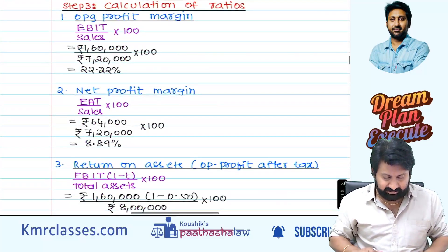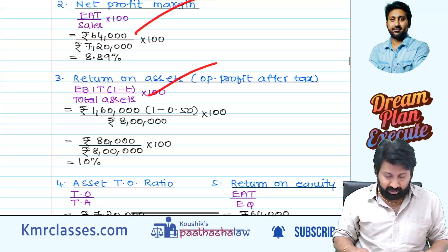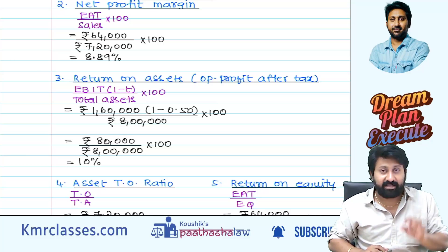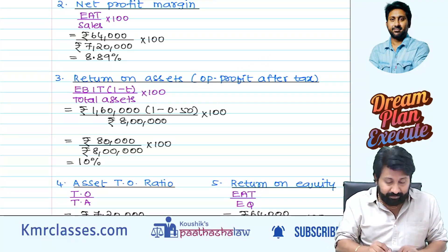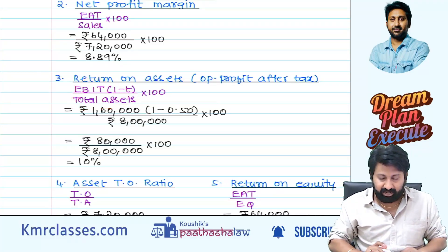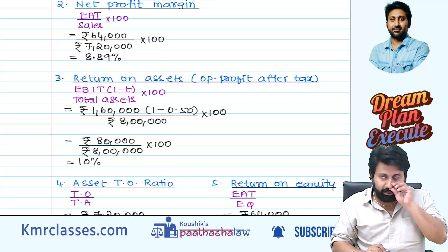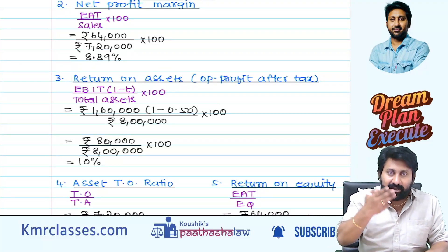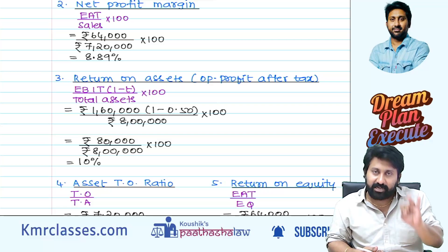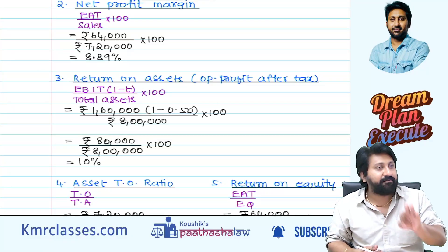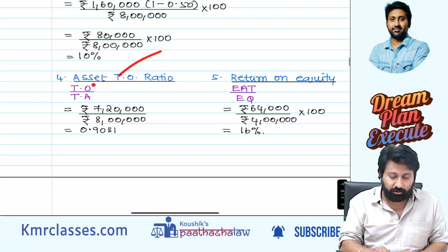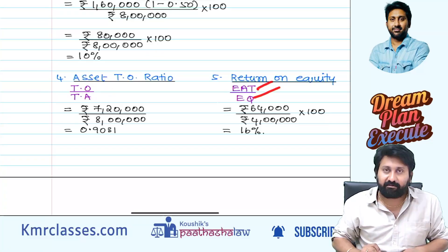EBIT by sales gives operating profit margin. Very important adjustment — return on assets: if they clearly tell you to take operating profit after tax, then use EBIT × (1 − t) by total assets. Otherwise use EBIT by total assets. Normally return on assets means profit divided by total assets — they will specify in the question which profit to use. Asset turnover ratio: turnover by total assets. Return on equity: return by equity — where return means PAT.